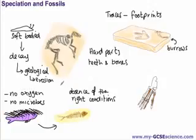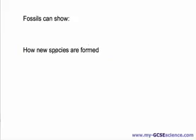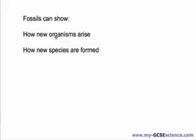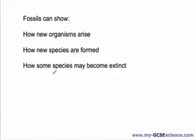Fossils can also show us a variety of other things. They can show us how new species are formed — one of the most famous examples is that of the horse, where we have quite a good fossil record showing how it changed from something the size of a dog all the way up to what it is now. Fossils also show how new organisms arise and when they first appeared, and how some species may have become extinct.